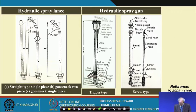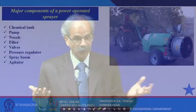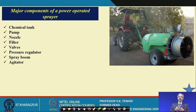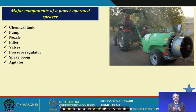The major components of power-operated sprayers — whether power operated or manually operated, the components remain more or less the same, except for the power source. The components are: the chemical tank, the pump with appropriate specifications, the type of nozzle, filters, valves, pressure regulator, spray boom, and agitator. In some cases you will need to agitate the whole chemical, because sometimes oil emulsions are there which cannot be directly put. Through this lecture, I wanted to introduce you to what is spraying and what is dusting, and what are the various types of devices available.